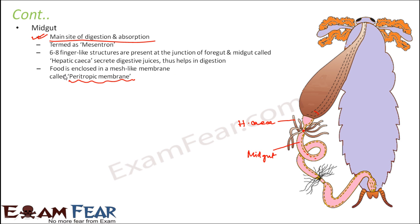The peritrophic membrane serves a protective function — it prevents the wall of the midgut from being damaged by hard food particles. If hard food particles directly contacted the midgut wall, they could cause harm. The membrane keeps food particles from directly interacting with the midgut wall.